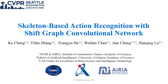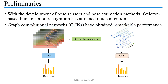Hello everyone, I am Ko Cheng from the Institution of Automation, Chinese Academy of Science. I am glad to present my work: Skeleton-based Action Recognition with Shift Graph Convolutional Network. With the development of pose sensors and pose estimation methods, skeleton-based human action recognition has attracted much attention.